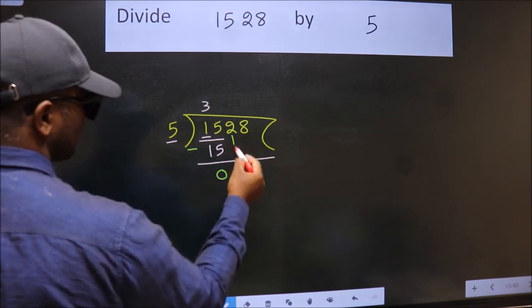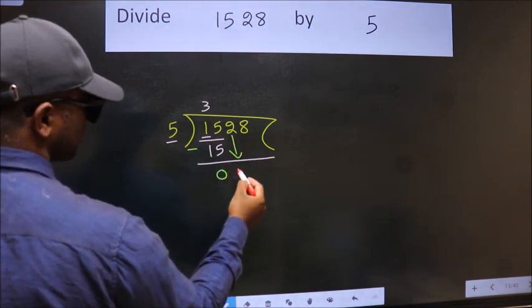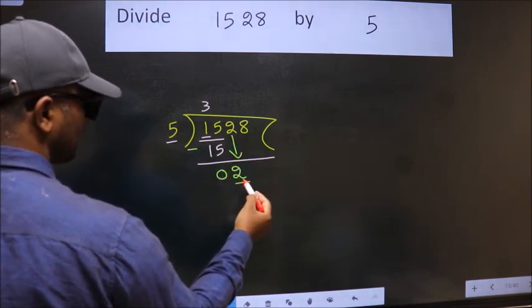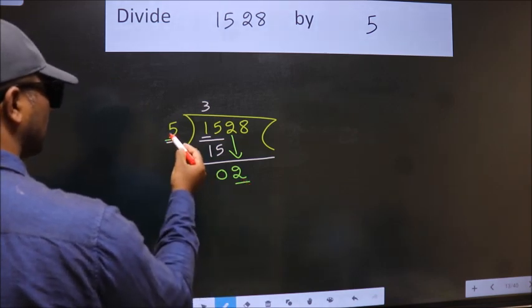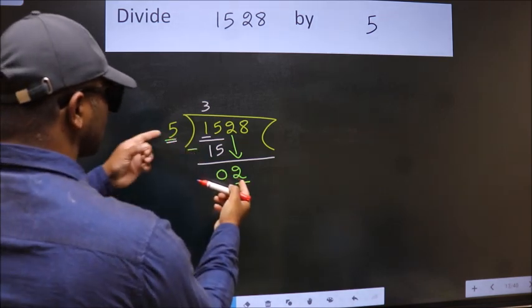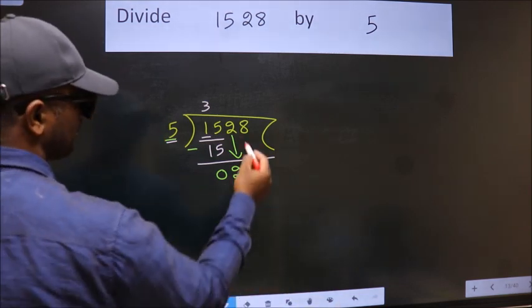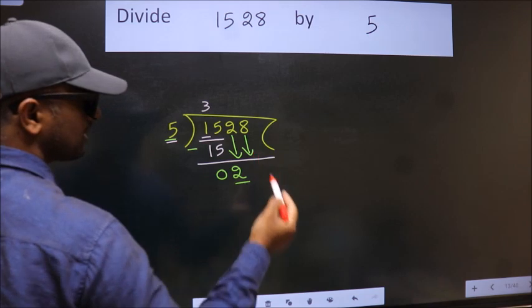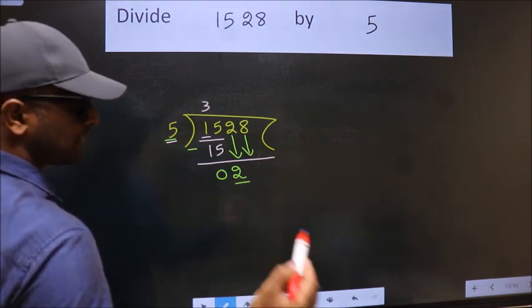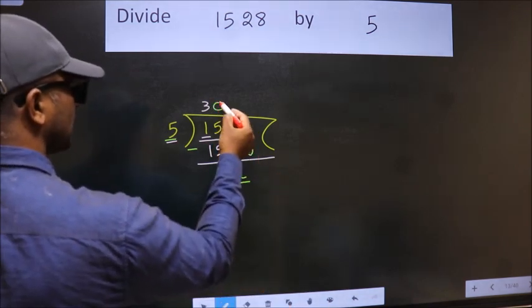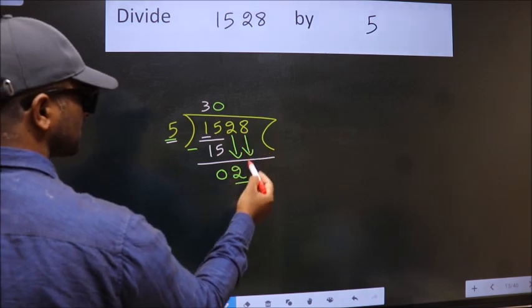After this, bring down the next number: 2. Now here we have 2, here 5. 2 is smaller than 5, so we should bring down the second number. The rule for bringing down the second number is to put 0 here. Then we can bring this number down.